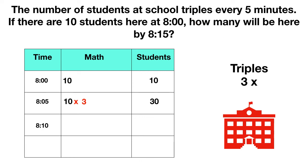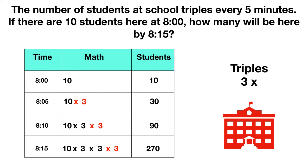At 8:10, five minutes later, we have the same number as before, but it triples again — multiply by three. Now there are 90 students. Finally, at 8:15, we take the same amount and triple or multiply by three one last time. Now there's a total of 270 students. So at 8:15, there are 270 students at school.